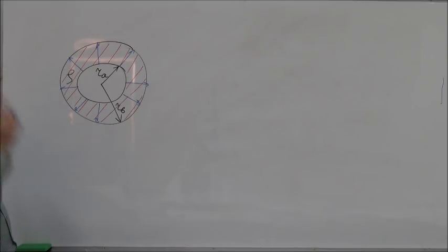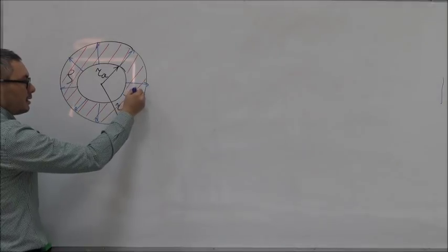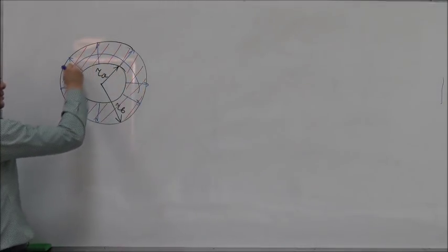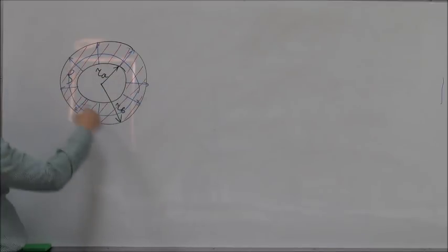To find that out, let's consider a small element of the hollow sphere which is symmetric with respect to this figure. An element which is symmetric would be a spherical shell, which I have shown with this blue line.